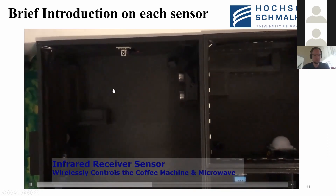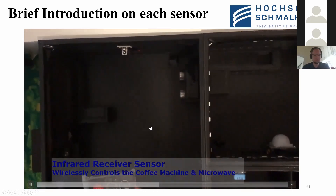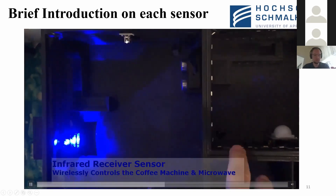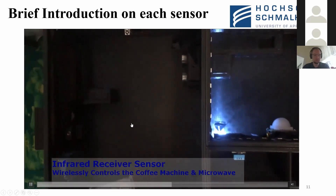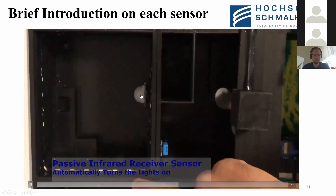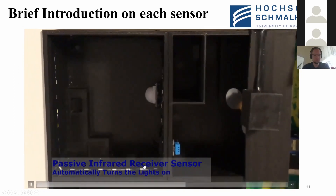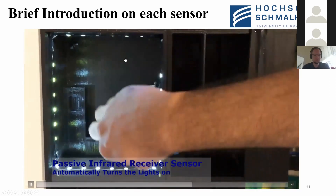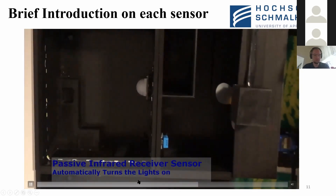The fourth is the infrared receiver sensor controlled by a remote control. When I press a button on the remote controller, the coffee machine turns on; pressing another button turns on the microwave. For the fifth, the PIR sensor is installed in the kitchen — it depends on the motion of the person. When the person is inside the room the lights go on, and they remain on while the person is moving. When they leave, the lights turn off.